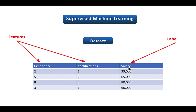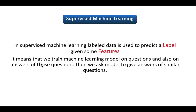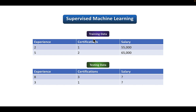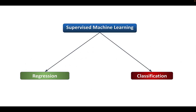Since the label is also present in the dataset, it's called a labeled dataset. In supervised machine learning, we train a model on questions and also on the answers to those questions, and then we ask the model to give answers to similar questions. We divide the dataset into training data — on which we train the model — and testing data, where we pass only the features and our model predicts the label.